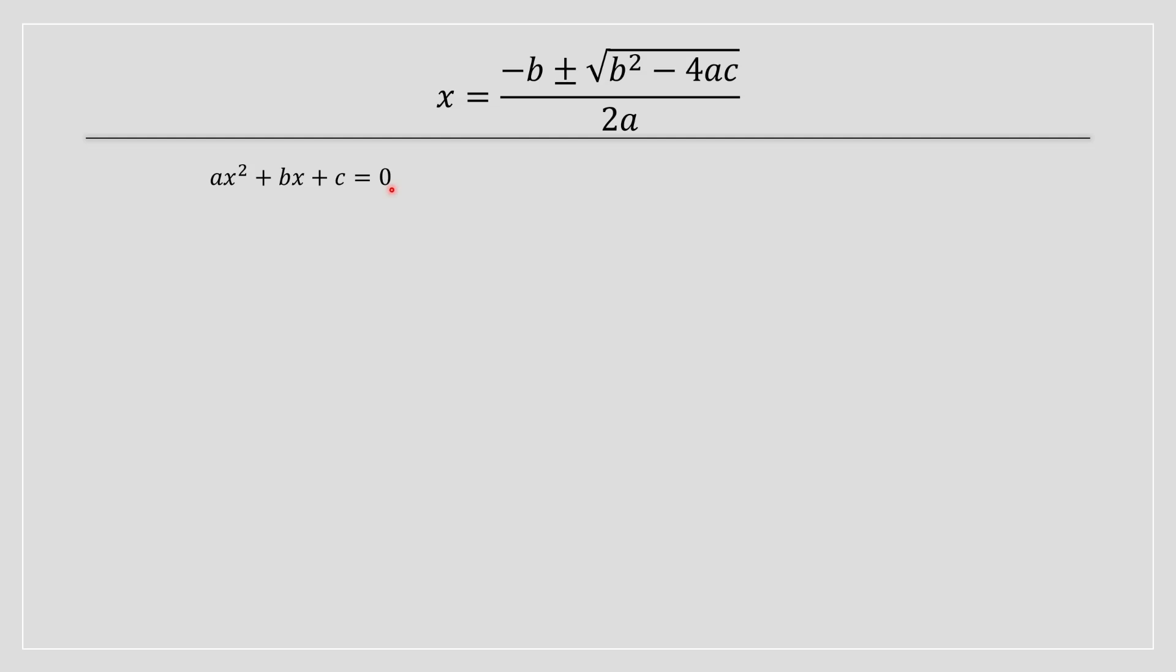This is our starting point. We are going to rearrange this equation to get the quadratic formula. The first step would be to divide a on both sides of this equation. Once you've divided a, you're going to have the equation that looks like this.